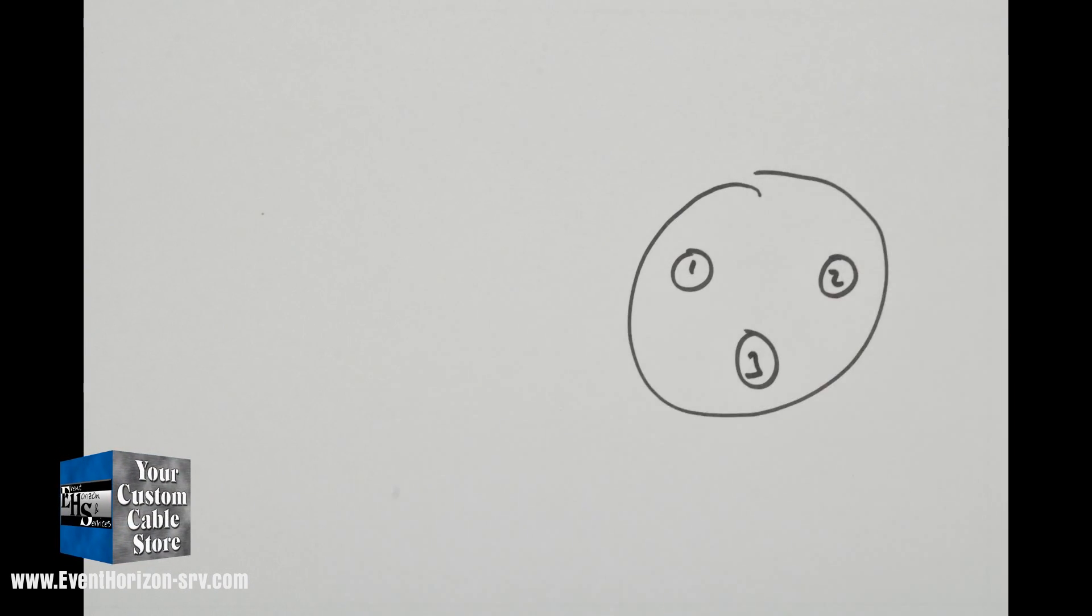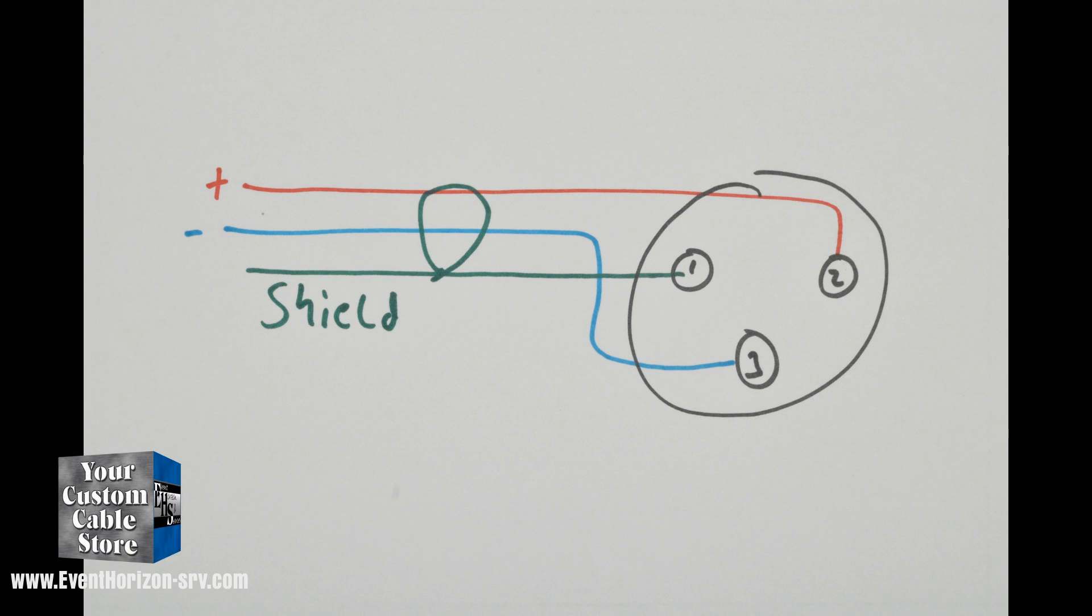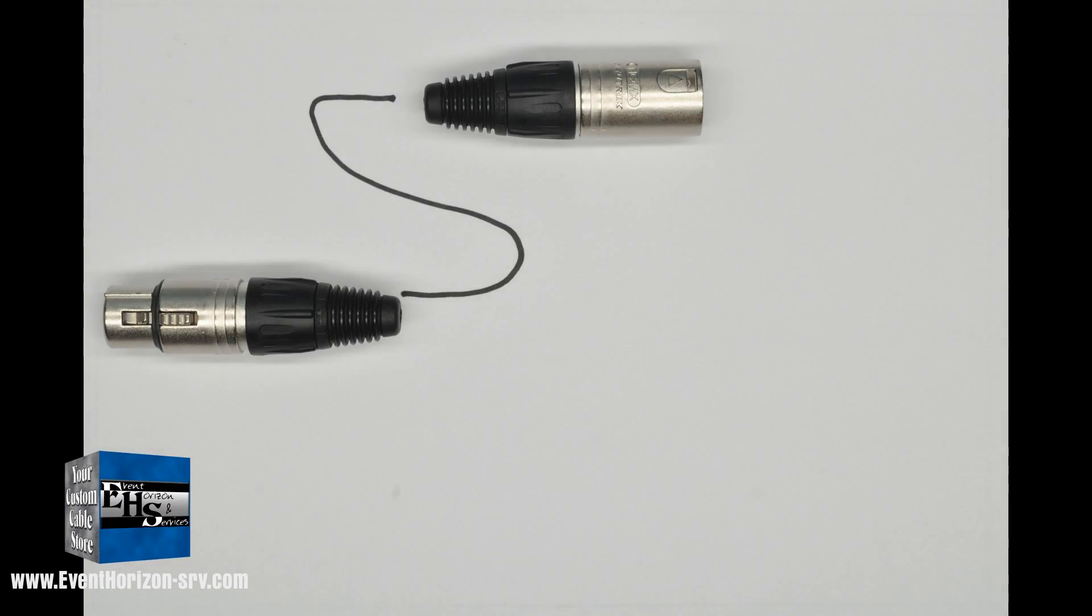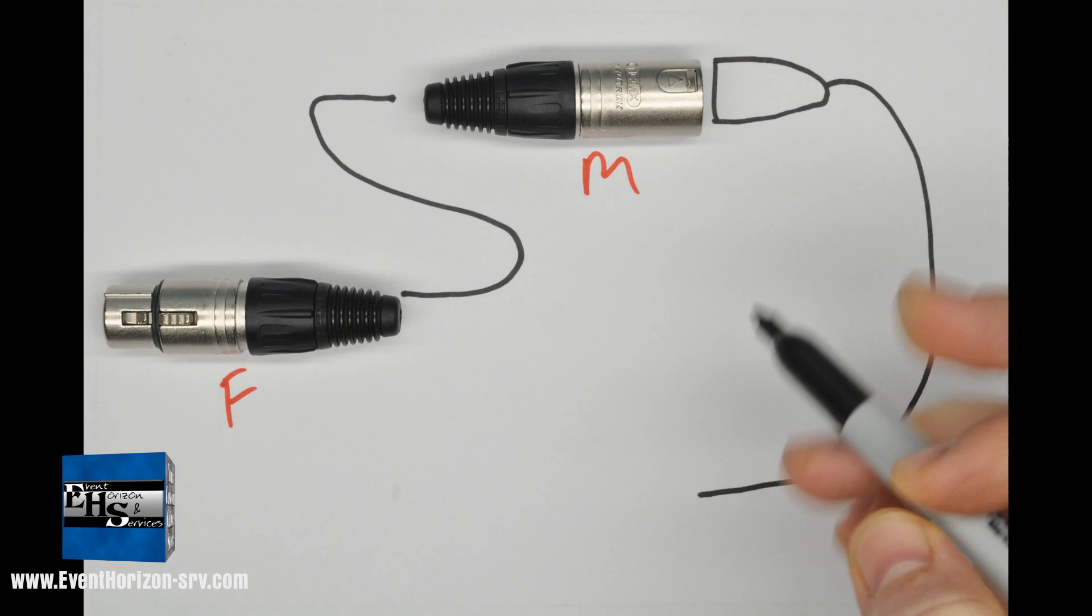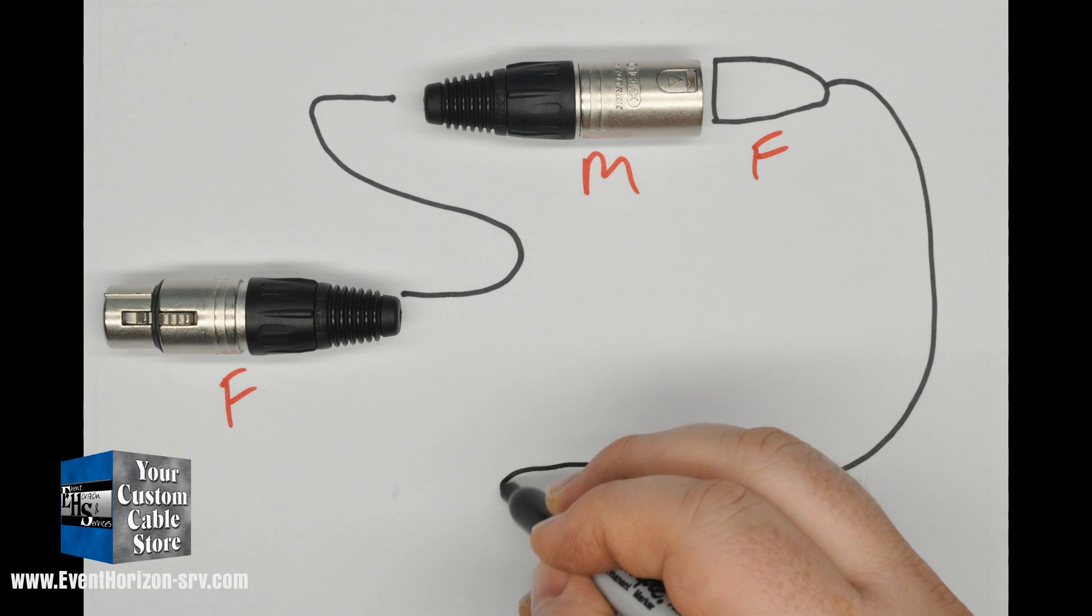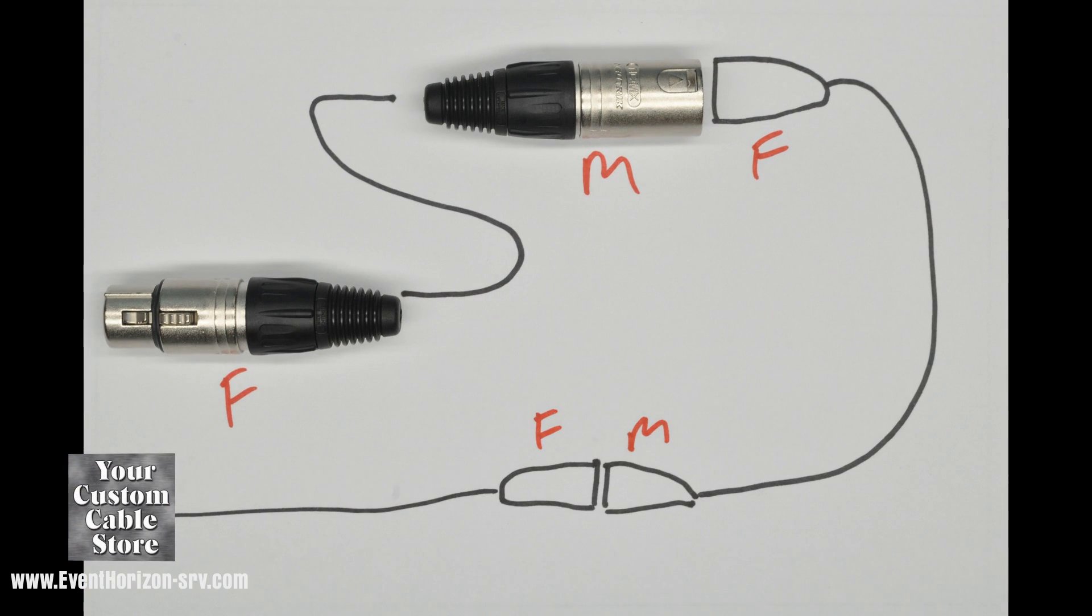The XLR can carry a balanced signal, which is best for rejecting noise. Normal cables come with a male on one end and a female on the other, so they are easy to extend if you need a longer cable.